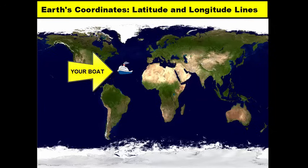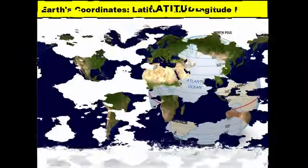In this lesson we're going to take a look at what latitude and longitude coordinates are and how they help us identify or locate places on the earth's surface. The first lines we'll talk about are latitude lines.